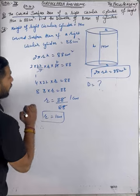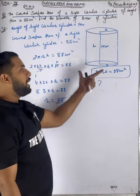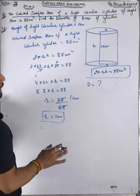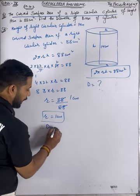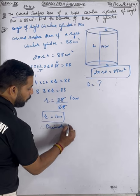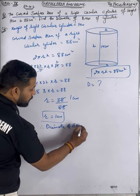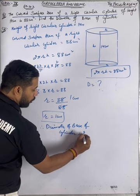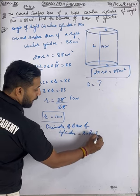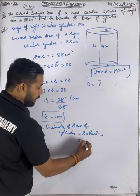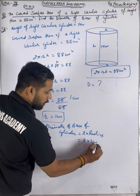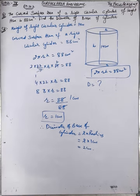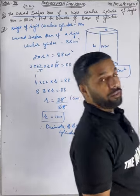The question asked for the diameter of the base of the cylinder. The diameter of the base will be the same as the top — there are no changes, because a cylinder has a uniform shape throughout. Therefore, diameter of the base of the cylindrical part = 2 × radius = 2 × 1 cm = 2 cm. This is a very easy question.